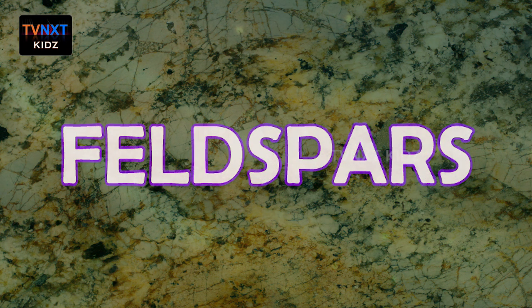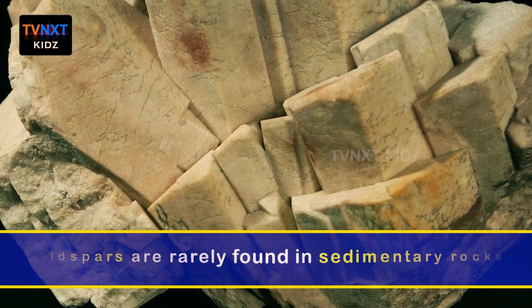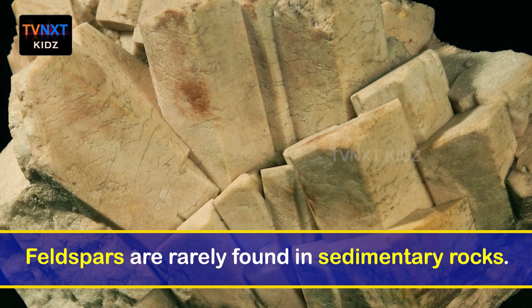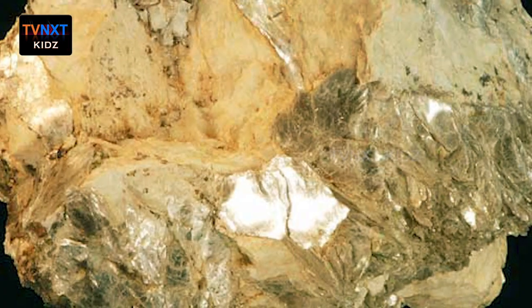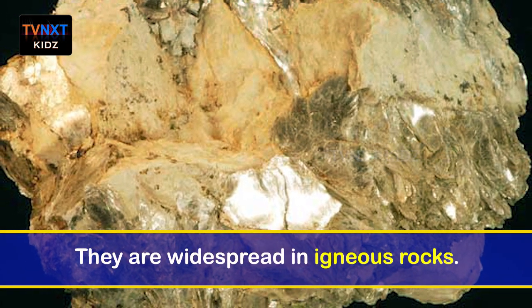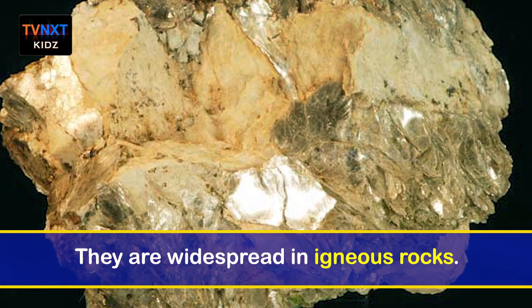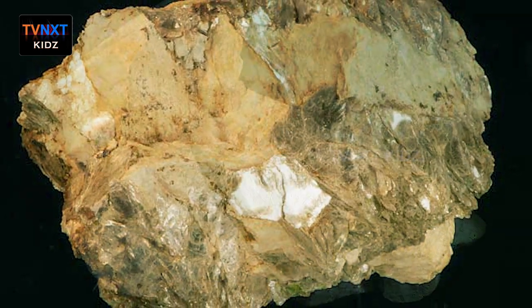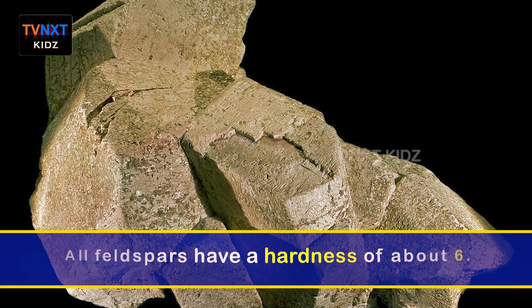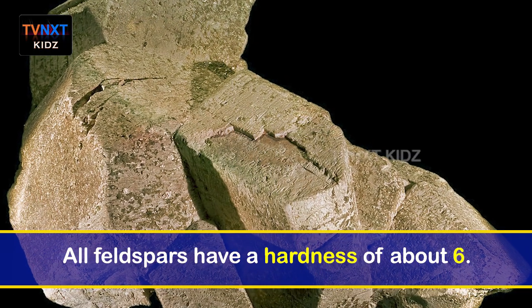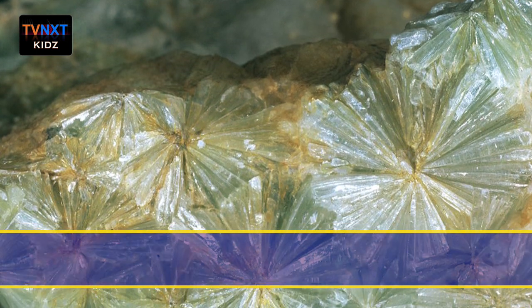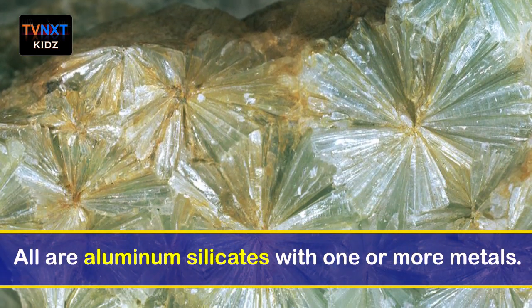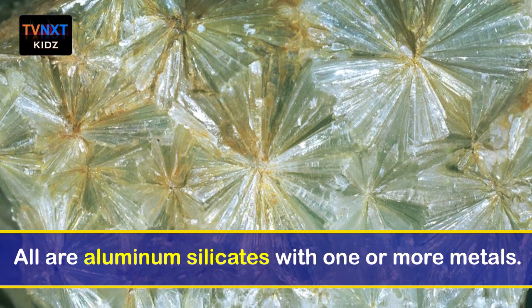Feldspars are rarely found in sedimentary rocks. They are widespread in igneous rocks. All feldspars have a hardness of about 6. All are aluminum silicates with one or more metals.